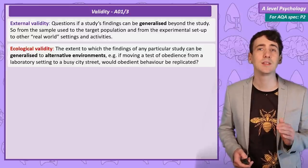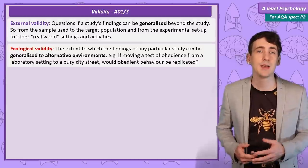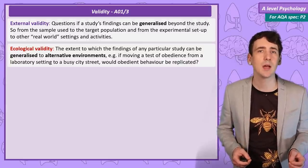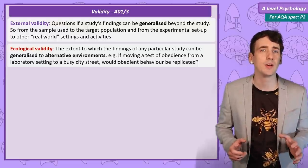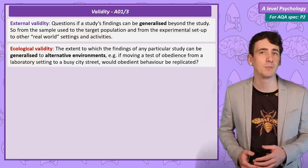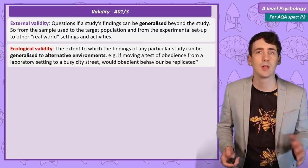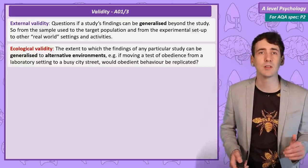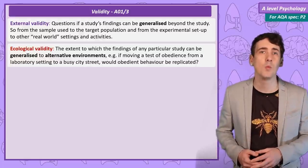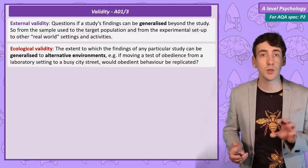Ecological validity is considering if the findings from a study in one setting can be generalised to other settings. It is a criticism often given to laboratory studies, as behaviour might be particularly unusual in a location that is very strange to participants and clearly set up for an experiment. But ecological validity is a concern no matter where the study is set — your behaviour might vary considerably from when you are at school, out shopping, or at a sports match, and we may not be able to generalise your behaviour to all settings from observing you in just one.